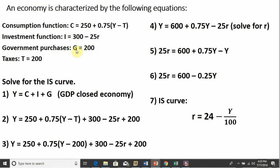Government purchases, G here, will just equal $200. We also have taxes, T, and that will also equal $200.